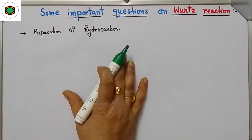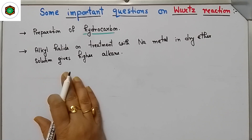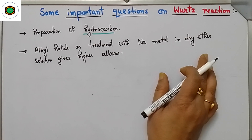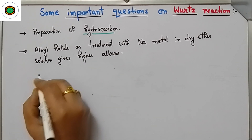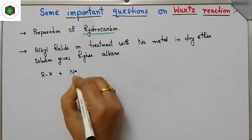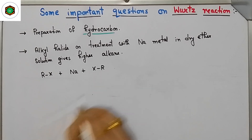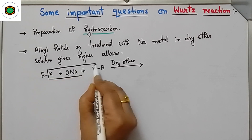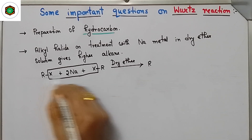It is a method for preparation of hydrocarbons. In this method, alkyl halide on treatment with sodium metal in dry ether — dry ether means moisture-free ether — gives higher alkane. Suppose this is your alkyl halide; you have to treat it with sodium metal. Two moles of alkyl halide will react in dry ether and removal of NaX takes place, giving R-R.